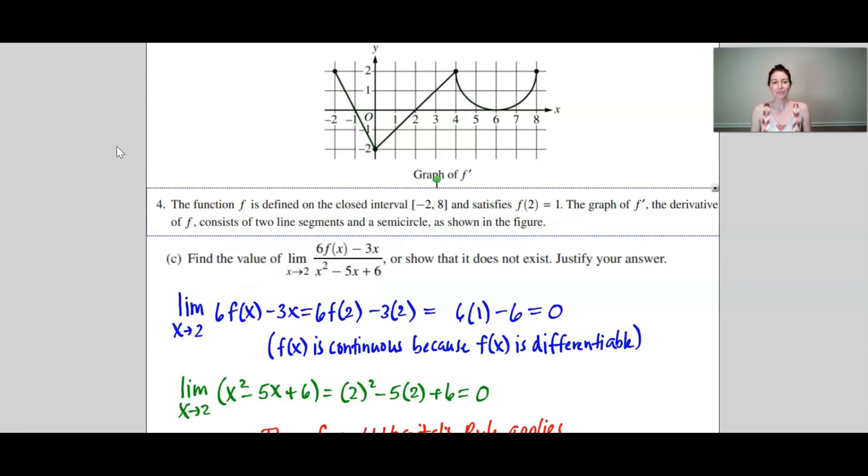Now into part c. We want to find this limit. And so the first thing I like to do is I like to find the limit of the numerator and denominator separately. So first, finding the limit as x approaches 2 of the numerator. Well, I'm going to use direct substitution to plug in 2. And the reason I can for this function is because I can see that the derivative exists for all values of x between negative 2 and 8. Therefore, f of x is continuous on that interval. And the limit as x approaches 2 of f of x does equal f of 2. I just want to make that important note. So plugging in 2 into this limit, I can see that the limit is 0.